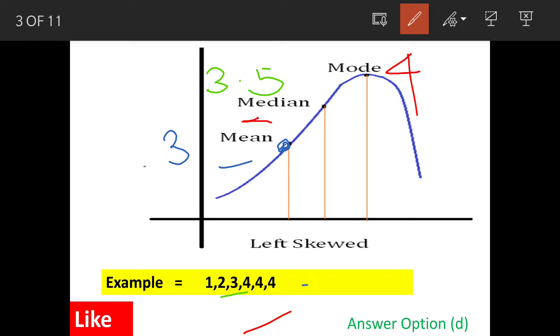Here also we see that mean is less than median and median is less than mode. Our curve which is drawn is actually left skewed curve. This is a left skewed curve. Our answer is option D.